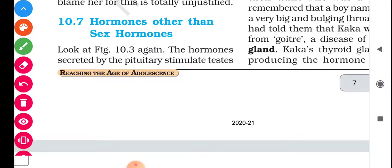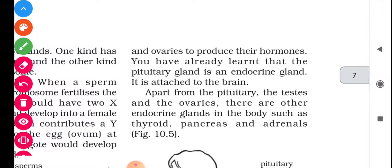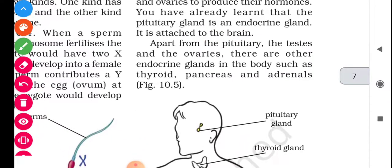Now let us look at topic 10.7: hormones other than the sex hormones. The hormone secreted by the pituitary stimulates the testes and ovaries to produce their hormones. We have already learned that the pituitary gland is an endocrine gland attached to the brain.